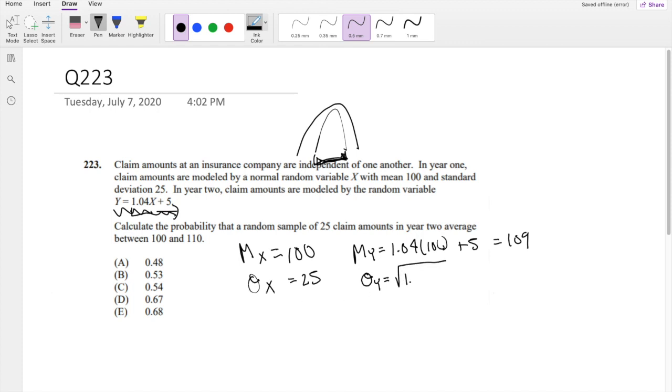As always, we have to square root 1.04 squared times 25 squared, which is just equal to 26.